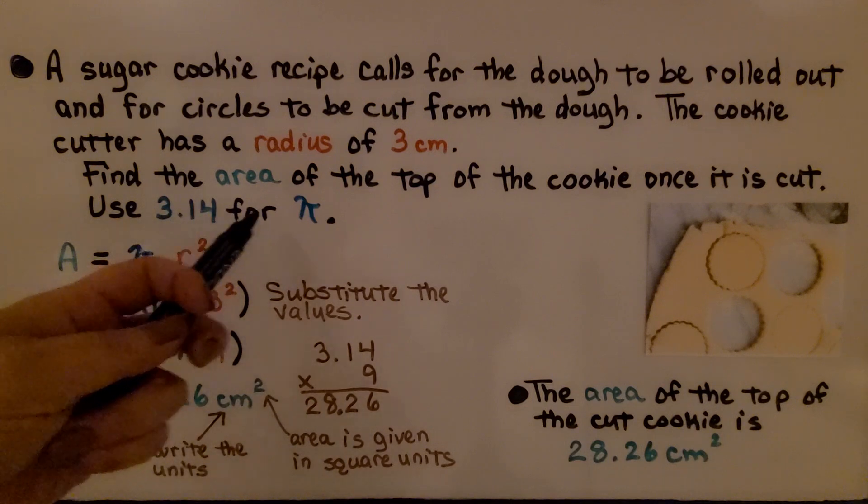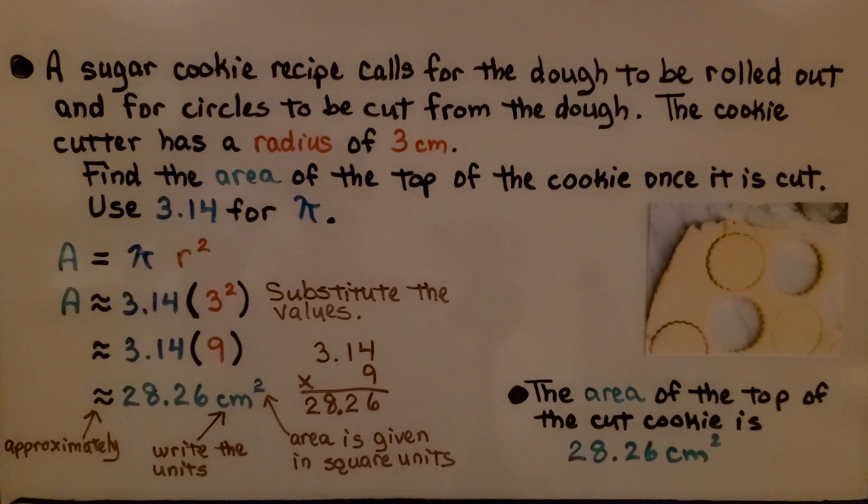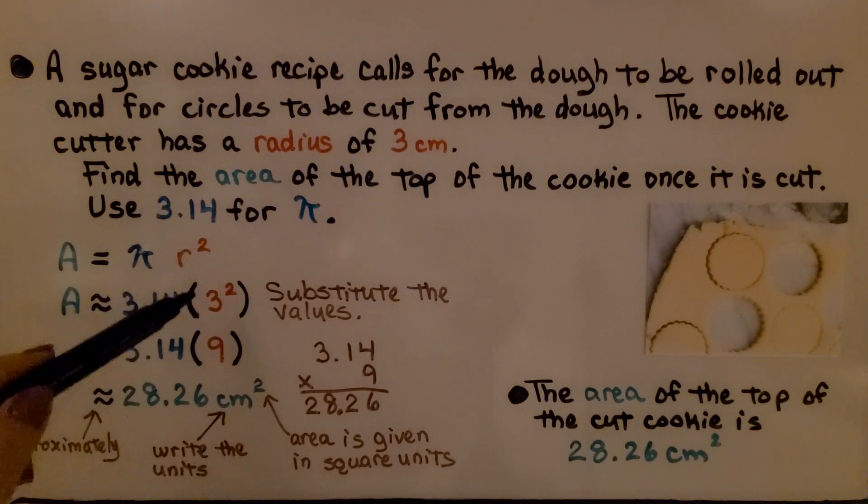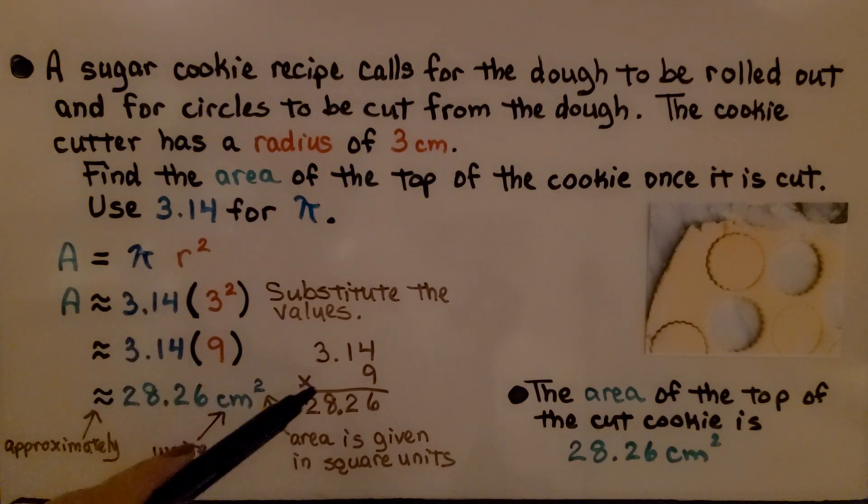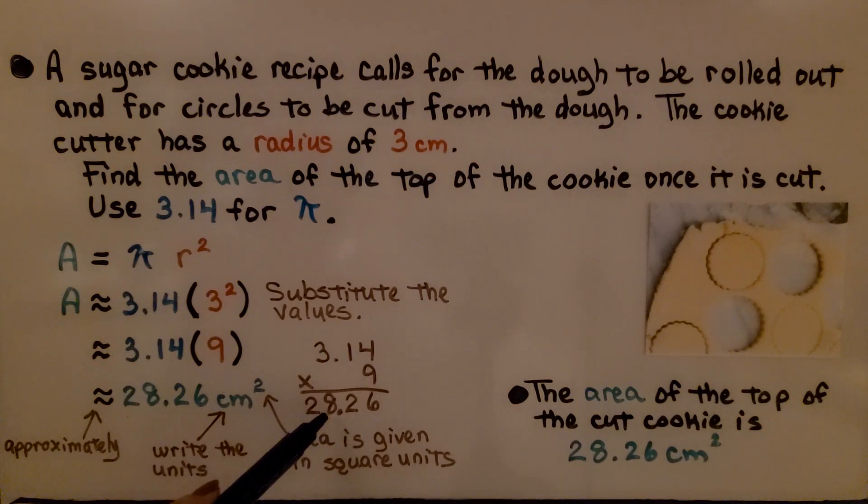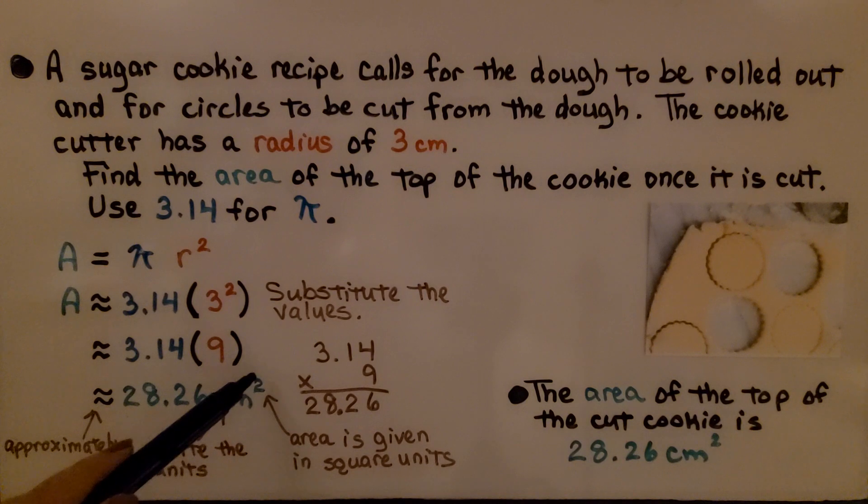Use 3.14 for pi. So here's our area formula for a circle, A equals pi r squared. We're going to substitute in the values. We know the radius is 3, so we have 3 squared. 3 squared is 9. We do 3.14 times 9 and we get 28.26 centimeters squared.